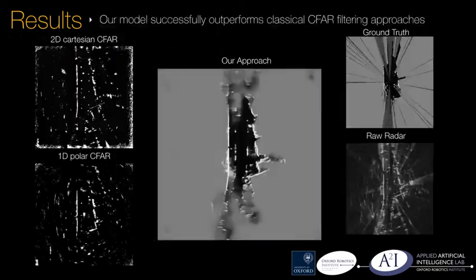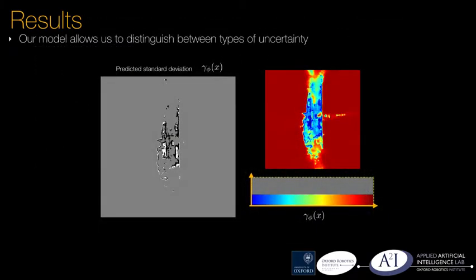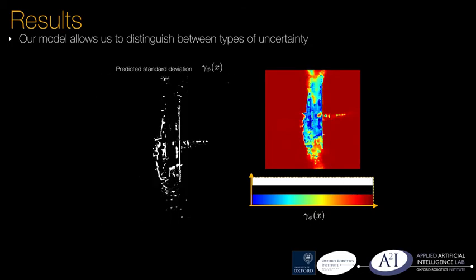The standard deviation predicted by our model allows us to distinguish between different types of uncertainty and largely captures uncertainties arising from random events independent of the true class of each cell, such as occlusion.